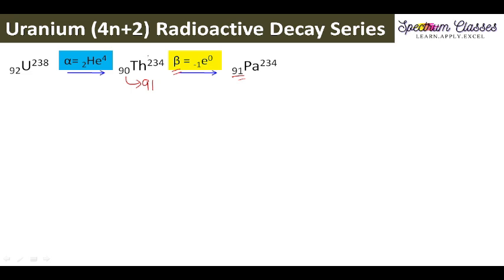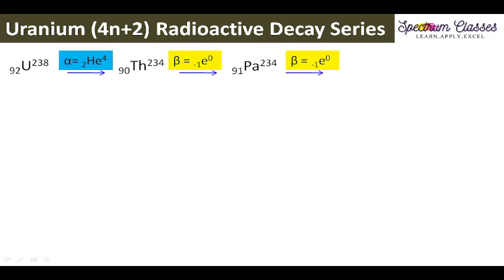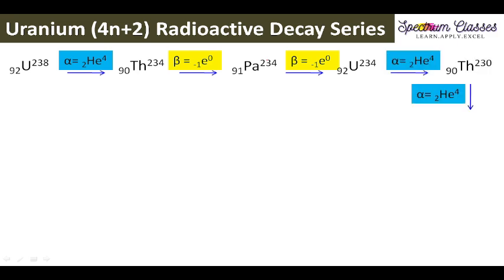The mass number remains unchanged when a beta particle is removed. After this we again remove a beta particle. Here is the scheme so that you can easily make your notes, and I am going to show you the number of steps.